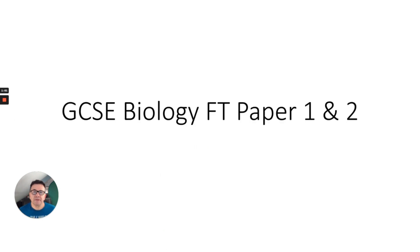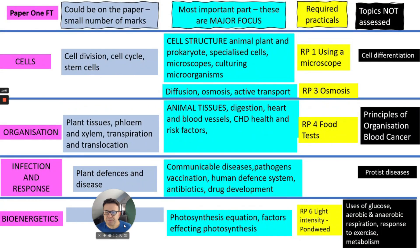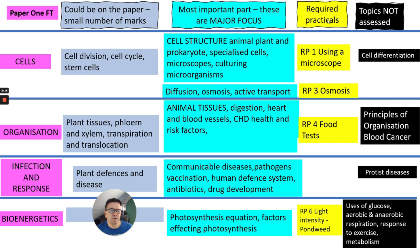Let's look at the content of GCSE Biology Foundation tier for this year. This shows all the major things for paper 1 — cells, organisation, infection and response, and bioenergetics could be on the paper. The minor focus and major focus topics are indicated, and the required practicals you really do need to know. On Dr. Biology YouTube, I've done all the required practicals so you can find them there.